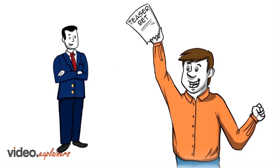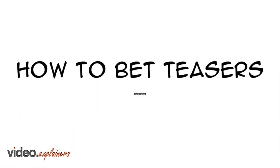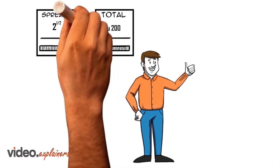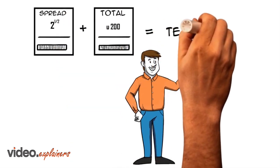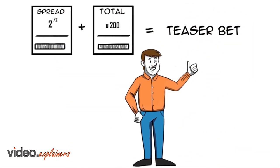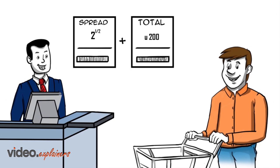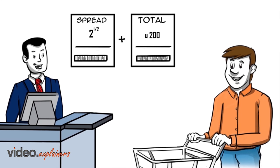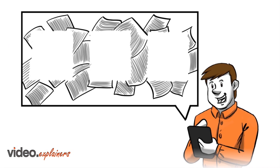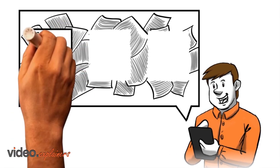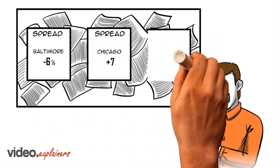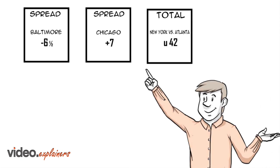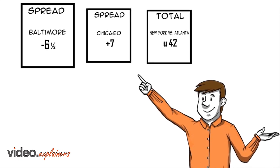Want to tease your bookie? A teaser combines multiple spread and total bets into a modified parlay. Buy points to shift lines in your favor. Here's an example: select three spreads, totals, or combinations of both - Baltimore minus 6.5, Chicago plus 7, New York versus Atlanta under 42.